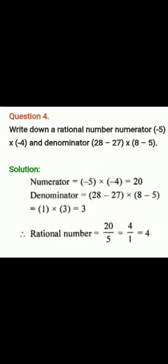Now let's talk about Question 4. Write down a rational number with numerator (-5) × (-4) and denominator (28 - 27) × (8 - 5).